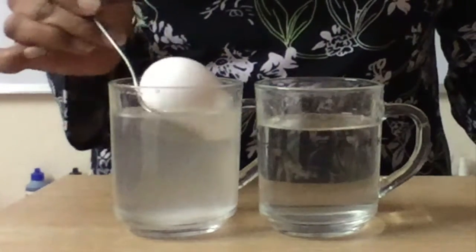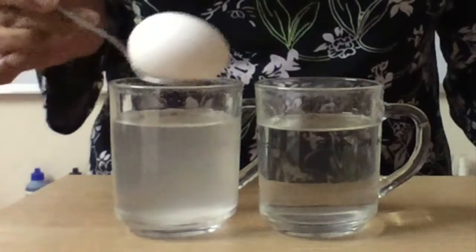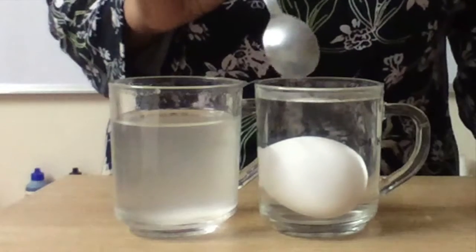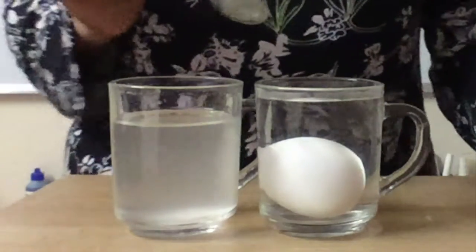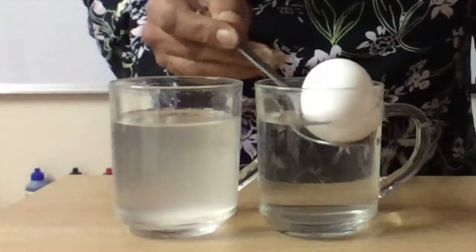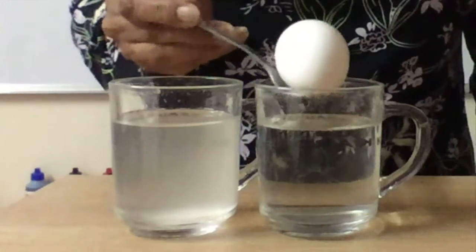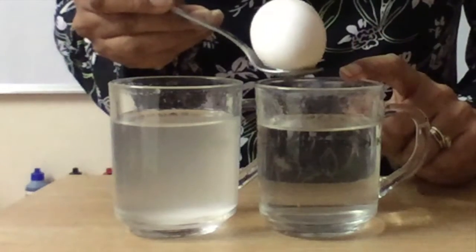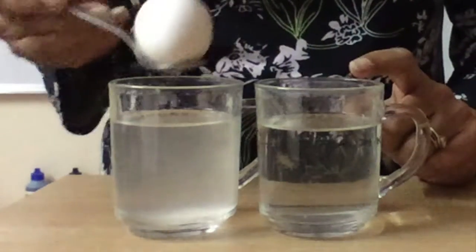Once again let us just check. We will remove it from here and we will place the egg over here. The egg is sinking. And the reason for that is the weight of the water displaced in this mug is less. Why? Because the density of water is 1 gram per centimeter cube.